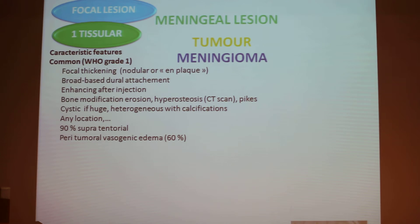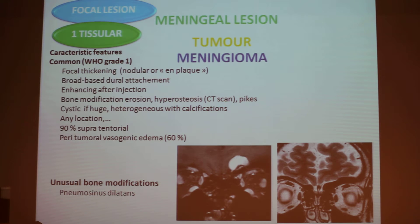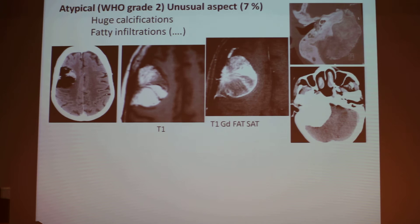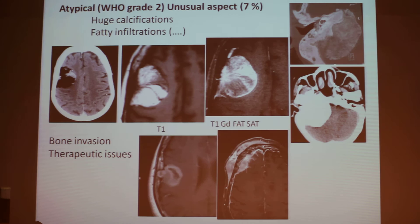Cavernous sinus meningioma often has an effect on the carotid artery and often has extension into the skull. Bone modifications can include destruction, lysis, calcification, and importantly the dilatation of the sinus at contact with the meningioma, called pneumosinus dilatation. Sometimes meningiomas are more unusual, such as completely calcified or with fatty infiltration, as seen on CT scan with dark fat density and white fat on T1 erased by fat saturation. Bone invasion is very important to assess because it conditions the therapeutic approach — if there is bone invasion, all the bone must be removed. A very small percentage, about 2%, of meningiomas are malignant.